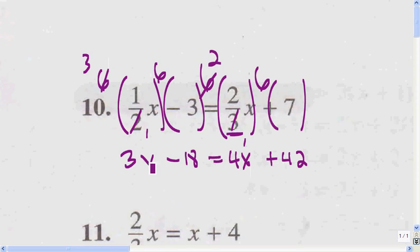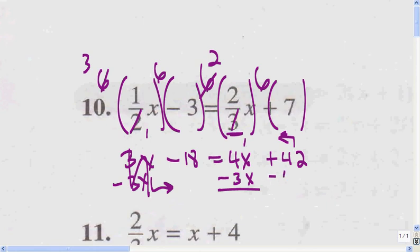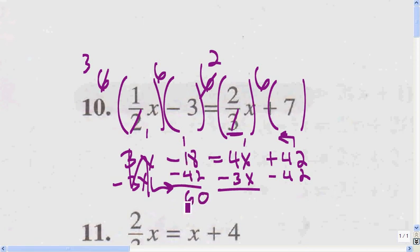I'm going to move the 3x over to this side and the 42 over to that side, by subtracting 3x from both sides and subtracting 42 from both sides. Since the signs are the same, I'm going to add 42 and 18: 8 plus 2 is 10, carry the 1, 4 plus 1 is 5, plus 1 is 60 — it's a negative 60. That equals 4x minus 3x, so x equals negative 60.